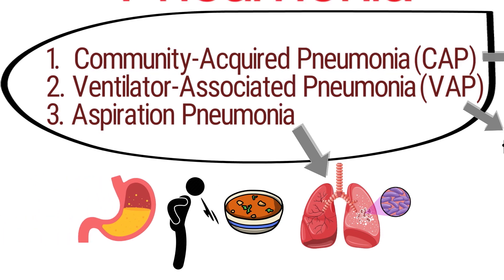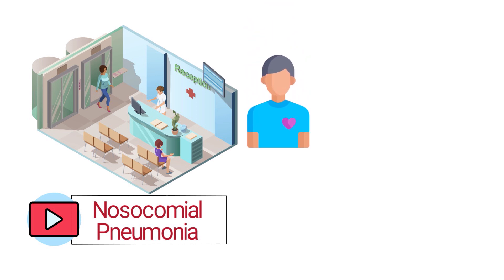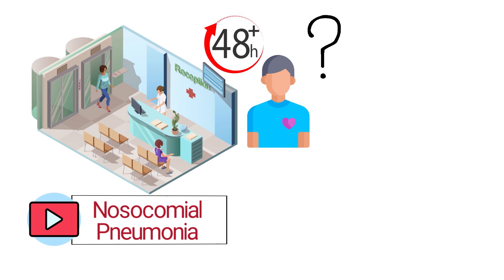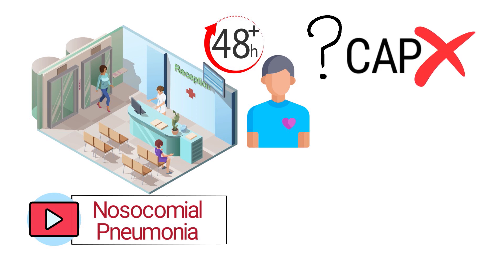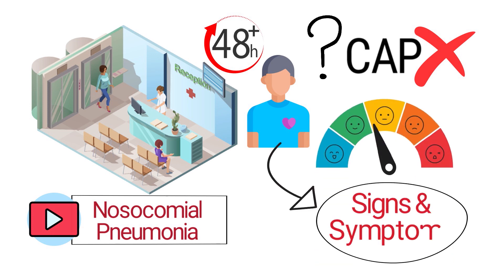For this video we're specifically focusing on nosocomial pneumonia. For it to classify as this type, the patient must acquire the infection more than 48 hours after being admitted to the hospital. This is how we can differentiate it from community-acquired pneumonia. A pneumonia infection can vary from mild to severe depending on the patient's signs and symptoms.